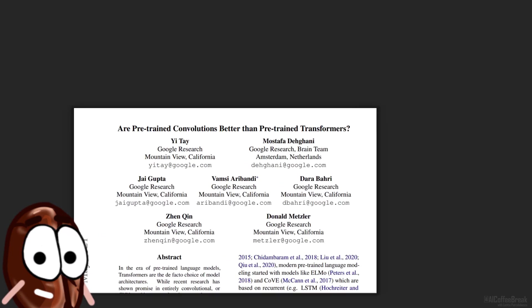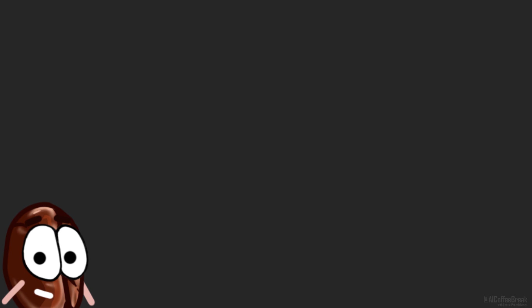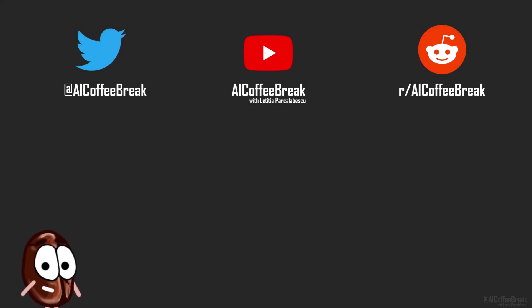What do you think? What are you allowed to remove from the transformer to still make it a transformer? Are you happy with the framing of this paper where they say that CNNs are compared with transformers, or do you think that transformers with convolutional layers are still transformers? And with all these questions, Miss Coffee Bean leaves us.